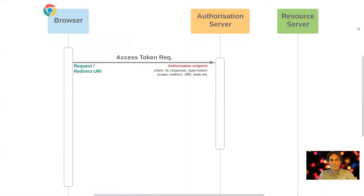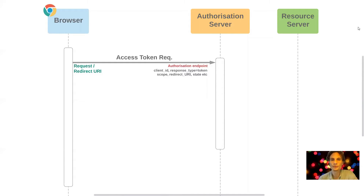The flow starts immediately with an access token request from the browser — an HTTP request or redirect to the authorization endpoint at the authorization server. The response type of this request is set to 'token' to indicate that the client immediately wants a token back. The client ID correlates the request with the specific client app. The scope is set to the scopes the client requires, and the redirect URI is the endpoint the authorization server is instructed to return the access tokens to — a URL that must match a whitelist of callback URLs configured in the authorization server.